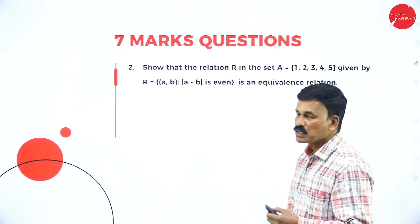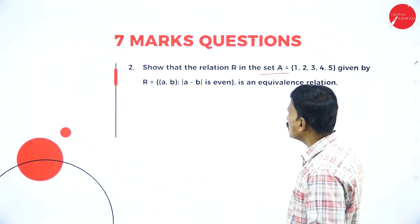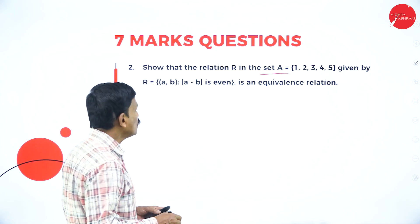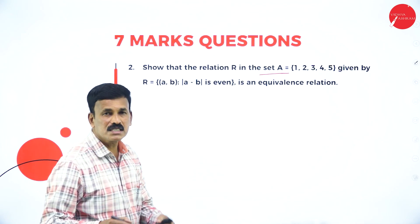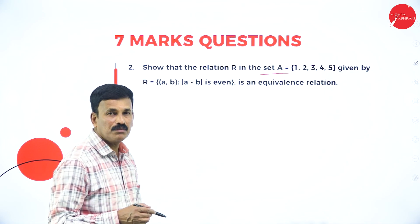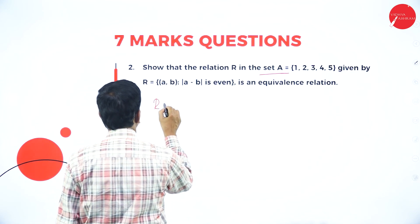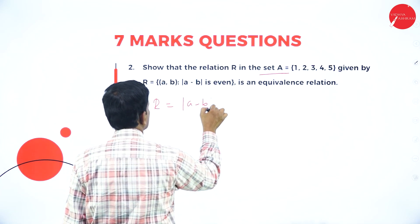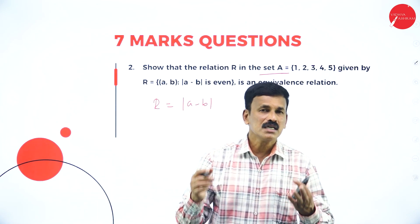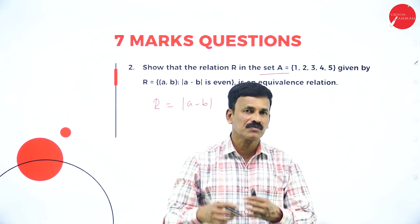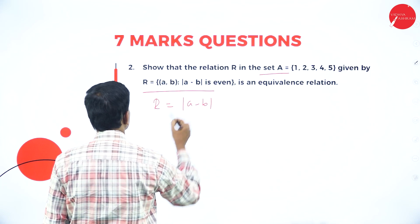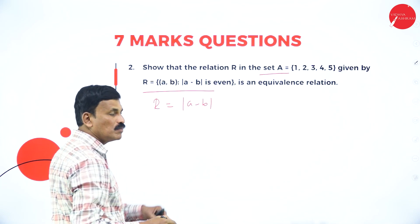Moving on to the next problem, a similar type: show that the relation R on the set A = {1, 2, 3, 4, 5} given by R = {(a, b) such that |a − b| is even} is an equivalence relation. Verify the same three properties — reflexive, symmetric, and transitive — and if all are satisfied it is an equivalence relation. R is defined by |a − b| being an even number.